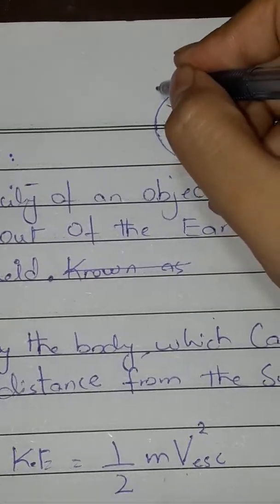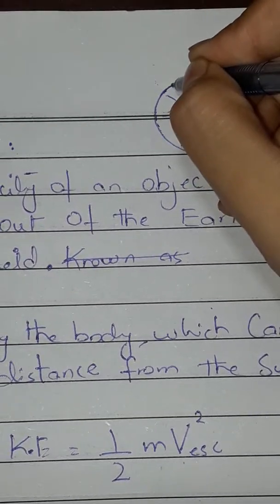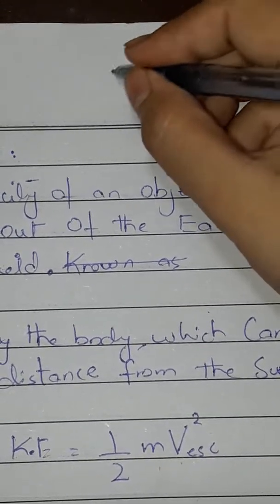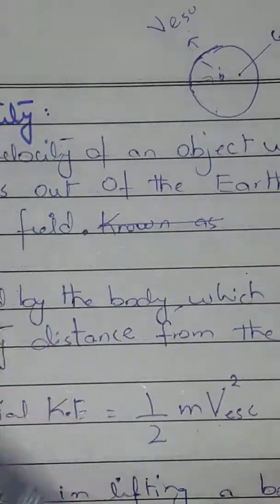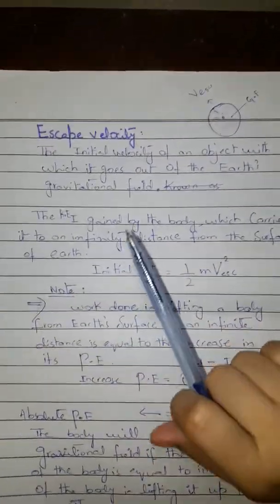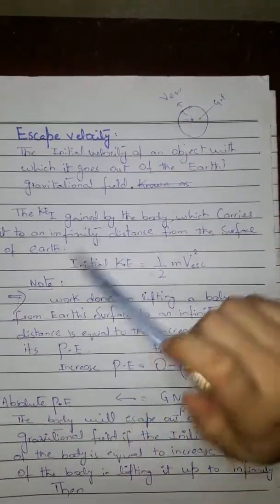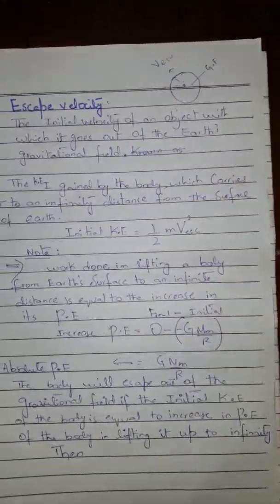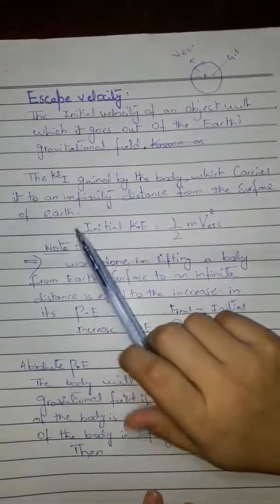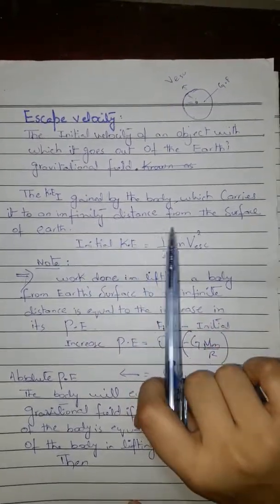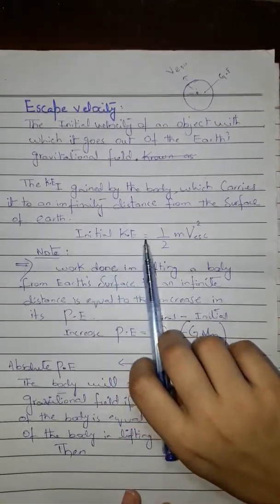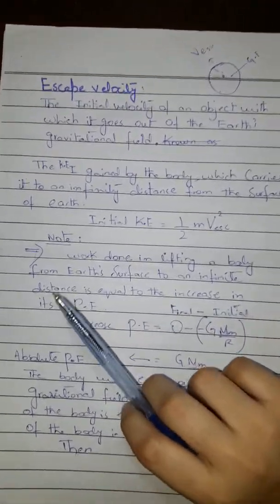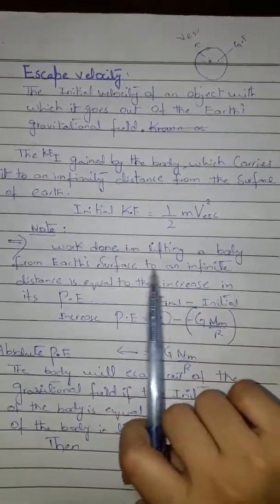Inside the earth's boundary there is a gravitational field. If the body is moving outward and escapes from this boundary line, that defines escape velocity. When the body gains a certain amount of kinetic energy, it moves to an infinite distance from the surface of the earth. So the initial kinetic energy equals one-half m·v_escape².